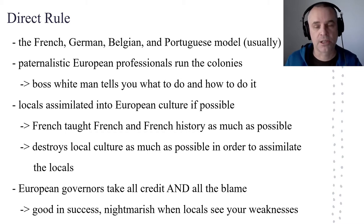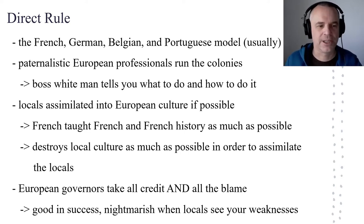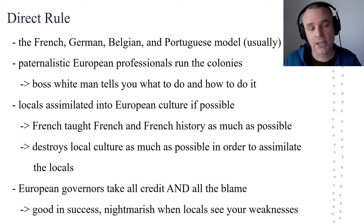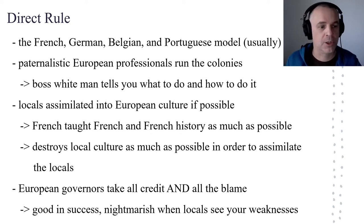For instance, the French in West Africa — which was their primary region — did a lot of teaching of French history: the French Revolution, Napoleon, all that business. And African people were not taught their own history, and would be like, 'I don't really understand why European history is being taught to us because it's not really our history.' And the French were like, 'But we have the good history so you have to learn it.' A key and intentional part of this was that if you were a direct ruler, you really did want to destroy as much local culture as possible and assimilate those locals.